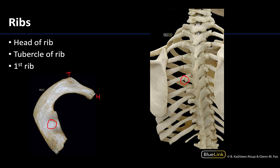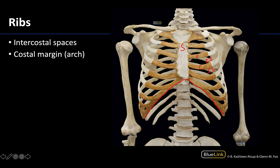So the head is this rounded region, the tubercle articulates with the transverse processes, and here you have this very unique first rib which is significantly curved and small. The other ribs continue to get larger as we move down the rib cage, until you get to the 11th and 12th ribs, which don't have an associated costal cartilage and are not nearly as curved — and that makes sense because they don't have that articulation with the sternum, so they don't need that anterior curvature.